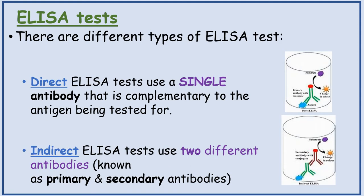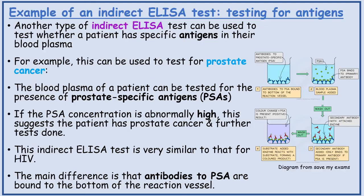There are different types of ELISA tests. Direct ELISA tests use a single antibody that is complementary to the antigen being tested for. An indirect ELISA test uses two different antibodies, known as primary and secondary antibodies. Another type of indirect ELISA test can be used to test whether a patient has specific antigens in their blood plasma.